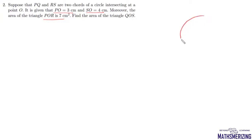We have chords PQ and RS. Say this is PQ and this is RS, and their point of intersection is O. It is given that PO is 3 and SO is 4. We are also given that the area of triangle POR is 7 cm².